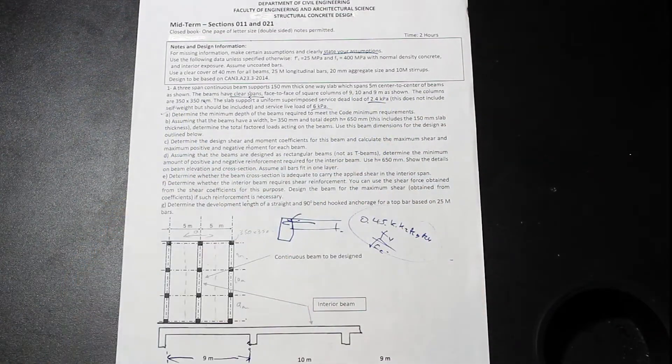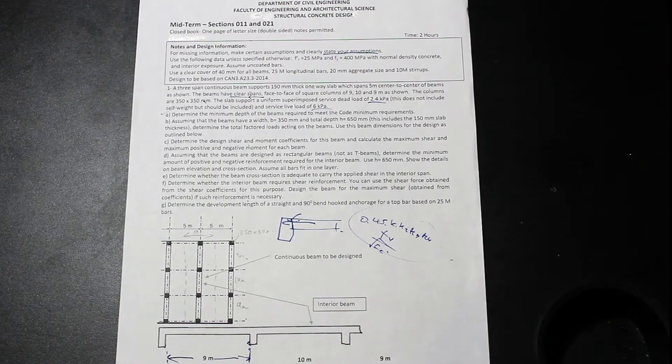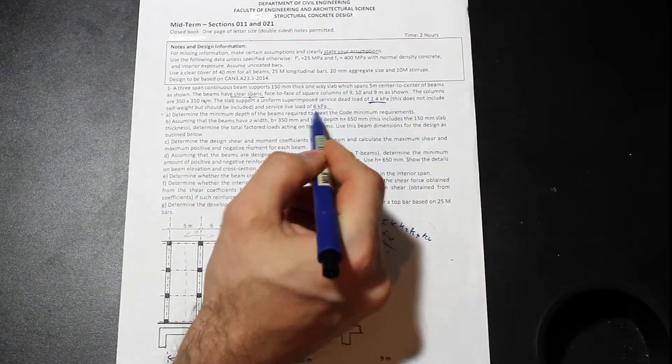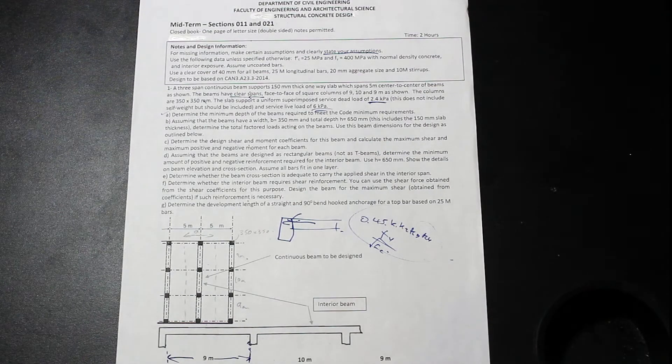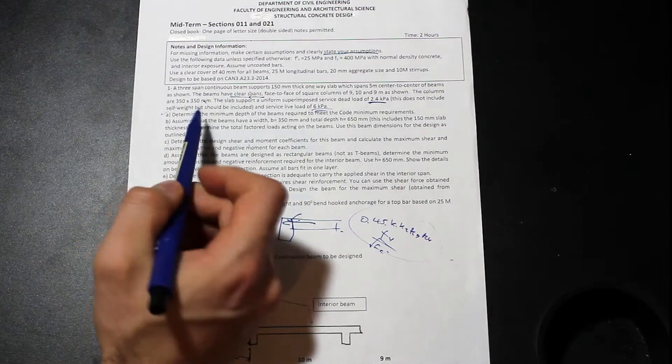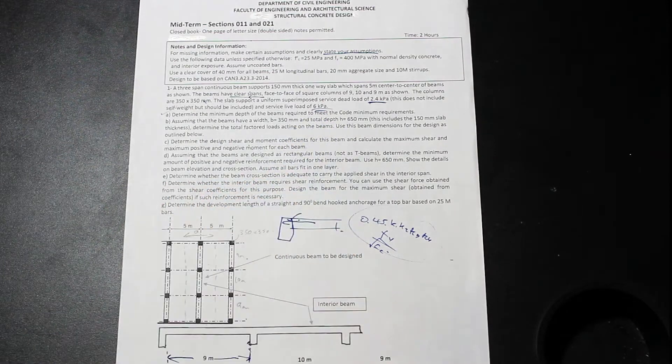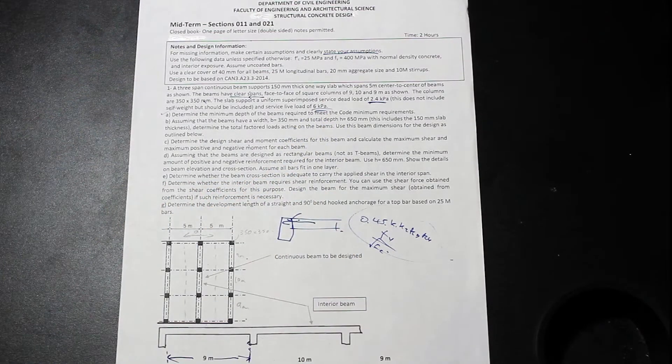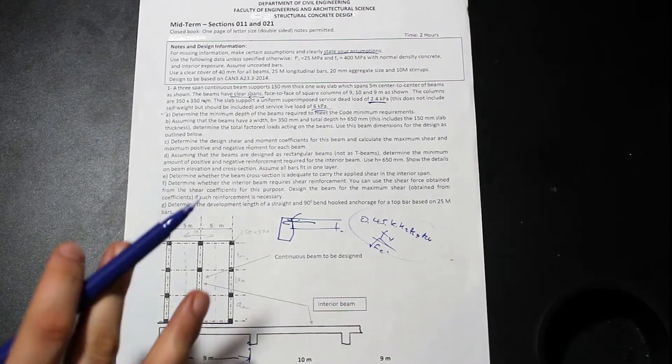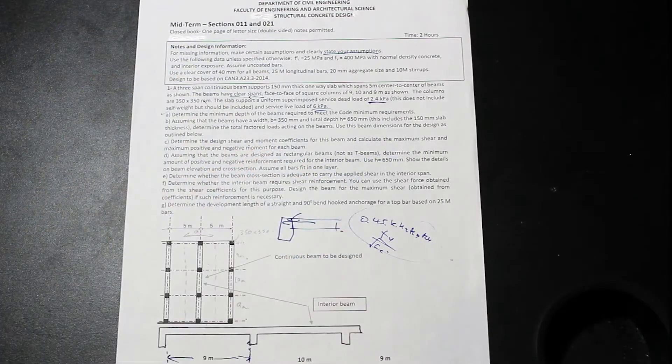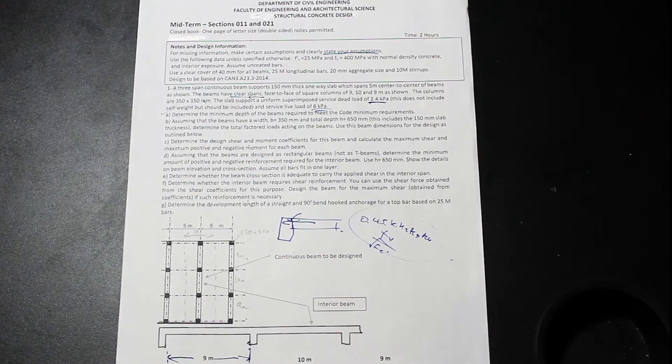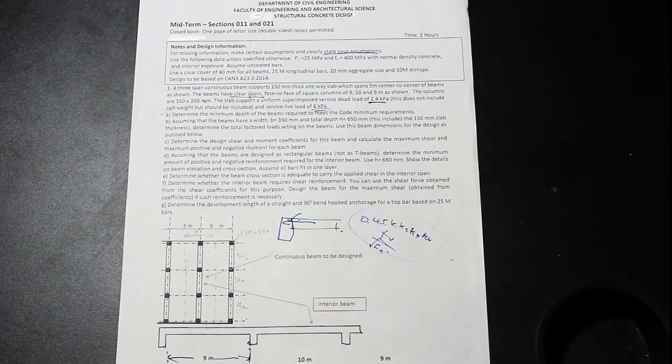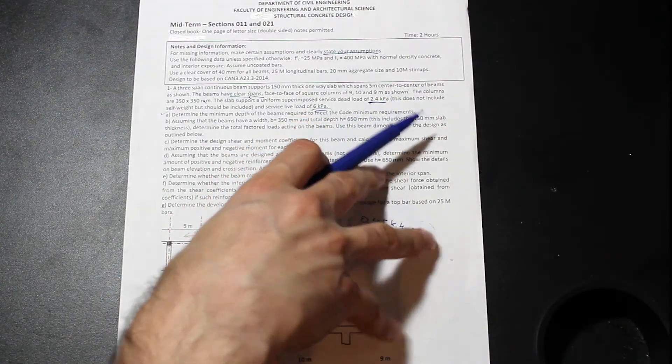Okay, so that's one thing that we're going to take a look at. The columns are 350 by 350. Slab supports a uniform, and we're given the SDL. We're given the live load. It also says that we need to find the self-weight. So first of all, it's going to ask us to determine the minimum depth of the beams required to meet the code minimum requirements. And this is one difference between, I think, you'll find in the later years of civil engineering and the earlier ones. In the earlier engineering classes, especially in civil, you were working with, like, stresses and strains and internal stresses, like strengths of materials type stuff.